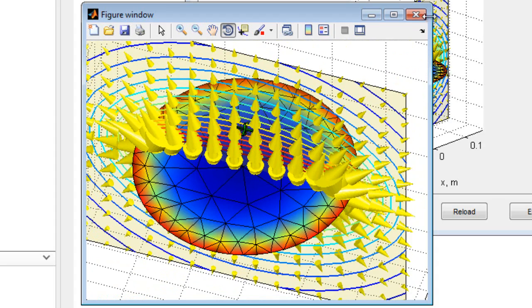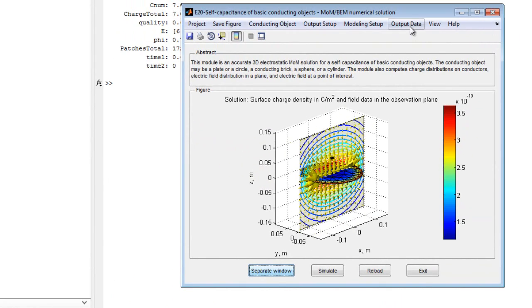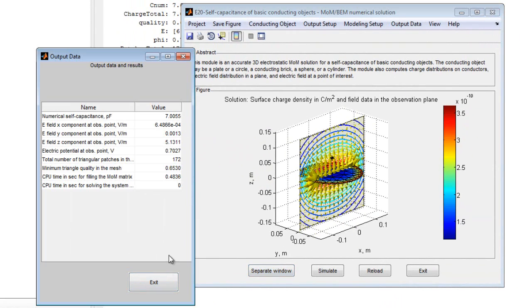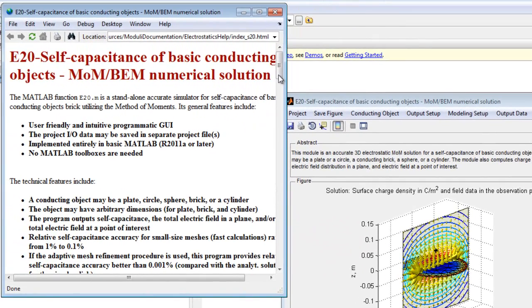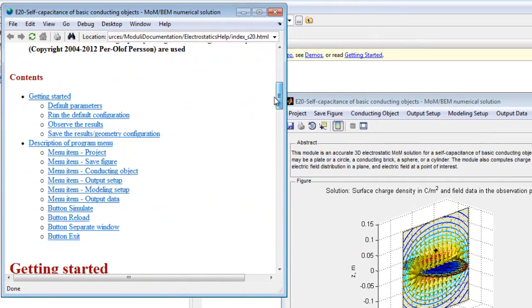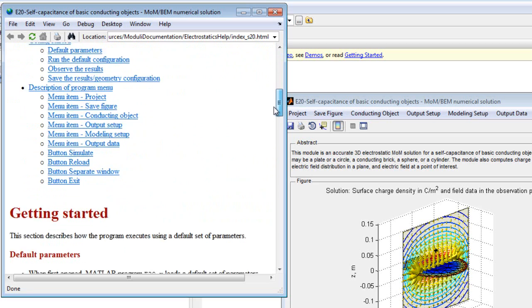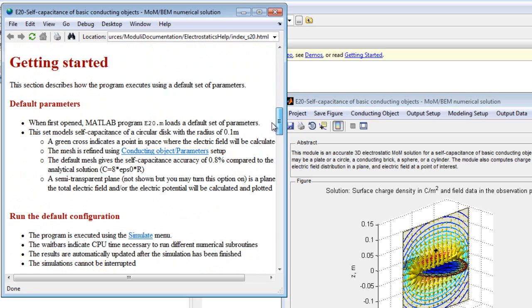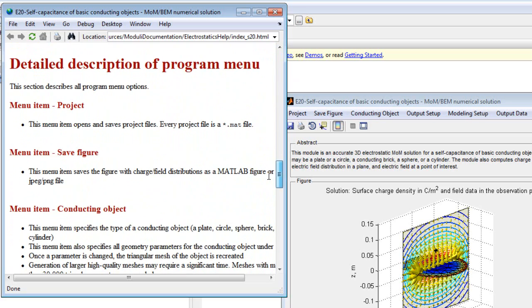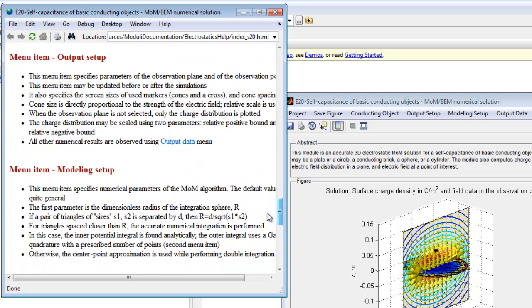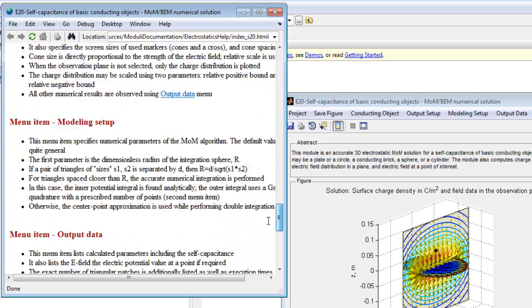Output data is displayed under the output data menu. Online help may be easily accessed. The help goes into great detail on all aspects of the program, including the default parameters, all available menus, and every option under each menu. The help also includes recommendations for producing fast and accurate simulations.